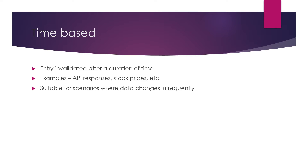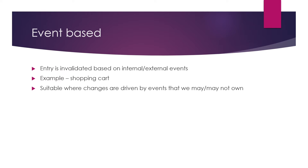In this approach, entries are invalidated based on the TTL property — based on time. Time-based invalidation is good for scenarios where data updates are slightly predictable but slightly stale information is also acceptable. Because if the actual data gets updated before the TTL expires, the cache will keep returning the old data, since for the caching layer the TTL of that entry is still valid. Overall, this policy is useful where data updates are slightly predictable and stale data is acceptable.